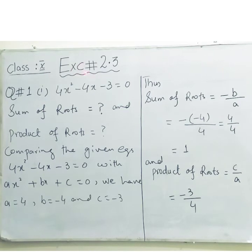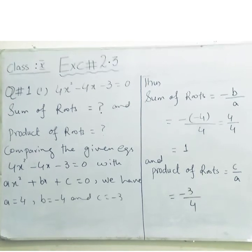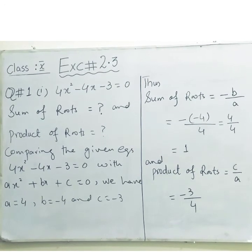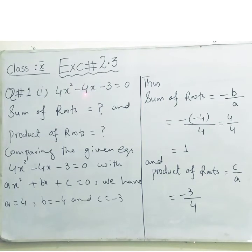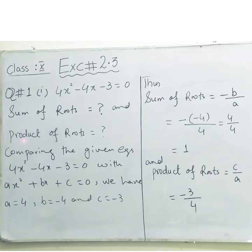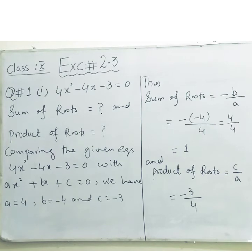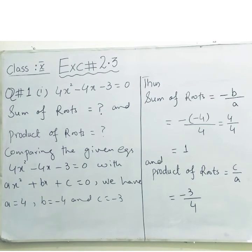Now we have exercise 2.3, question number one: without solving the equation, find the sum and product of the roots of the following quadratic equations. Part one: 4x² - 4x - 3 = 0. We need to find the sum and product of roots without solving, for which we need the values of a, b, and c by comparing with the general form.